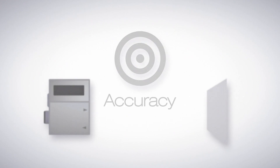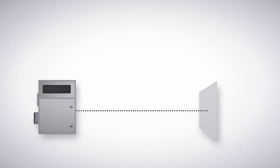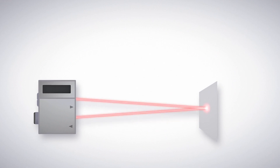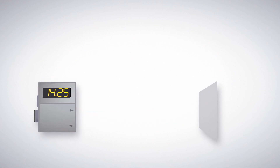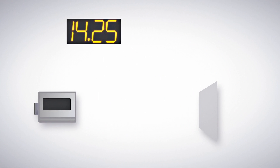Accuracy is the difference between the actual distance to a target and the sensor's measured distance, and is important when using the measurements directly from the sensor via IO-Link. But while highest accuracy may seem like the best, it's not the most valuable specification when it comes to performance.